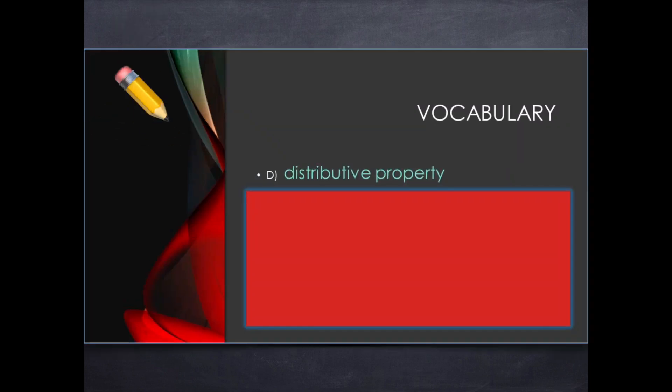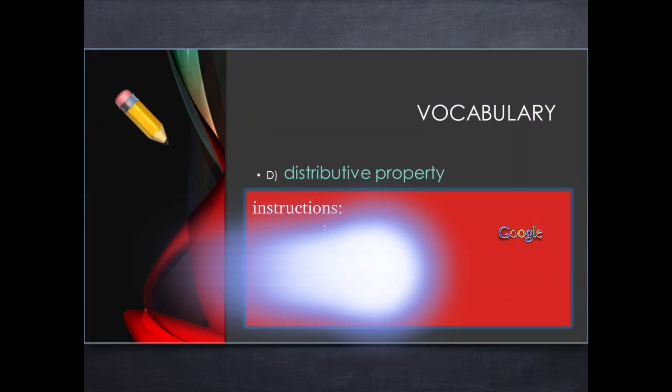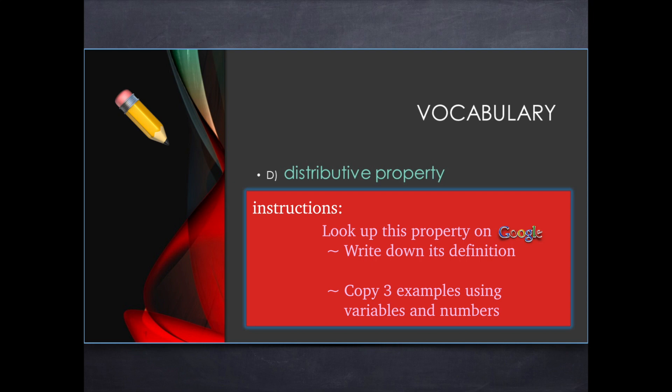And the distributive property. Really important property for algebra, especially. Gotta get the hang of what the arrows look like. So if you see examples that use arrows, you'll know what I mean when you see that. So look that up and get that in your notes as well.